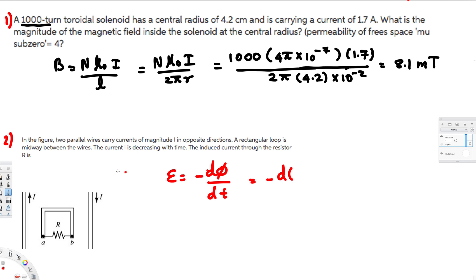This equals minus dΦ/dt. Magnetic flux is equal to B times A, so we can replace this with B times A. We're trying to find the relationship between EMF and current. The magnetic field equation is B equals 2μI, so we can replace B with 2μI.